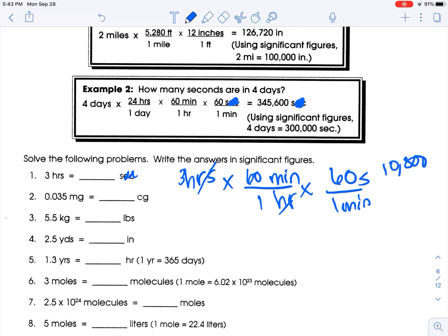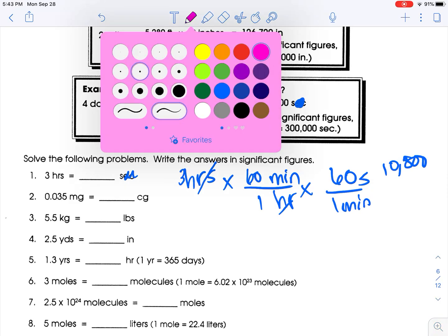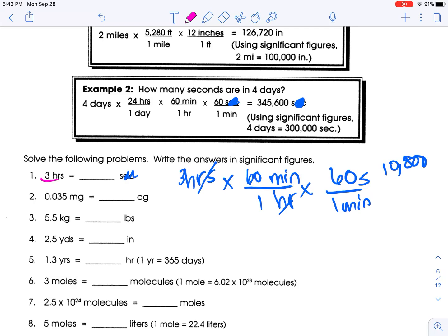Let's talk about sig figs for a second. This is one sig fig. We need one sig fig. Is the zero enough to round that up? No, so 10,000.